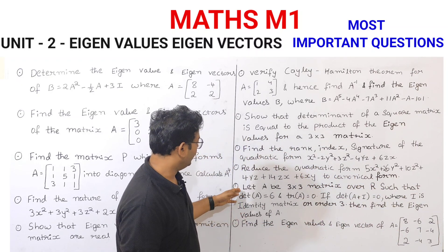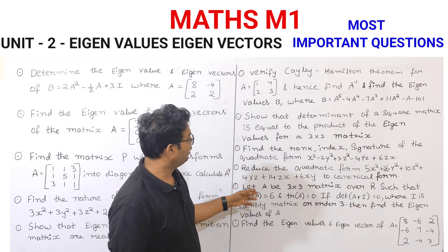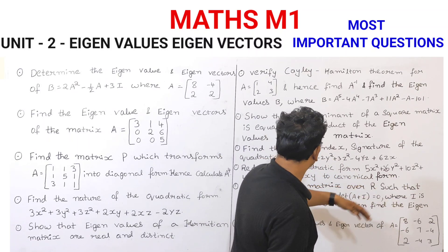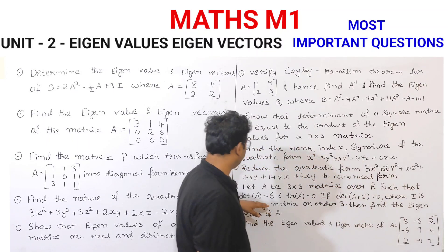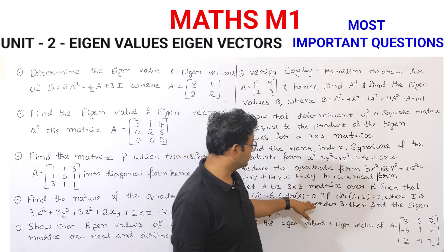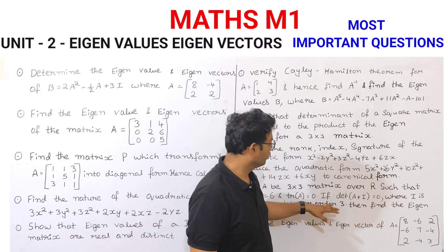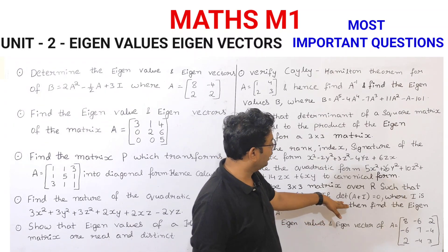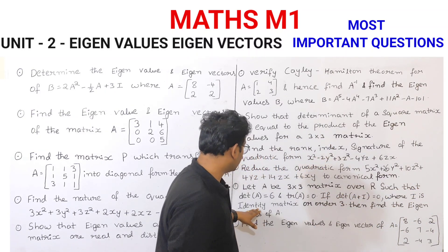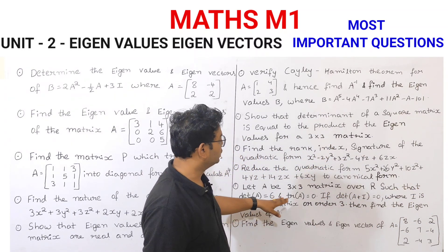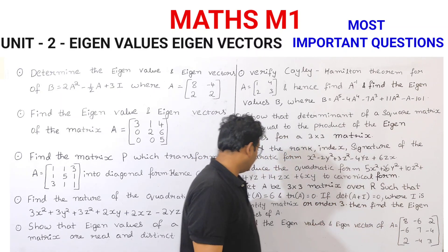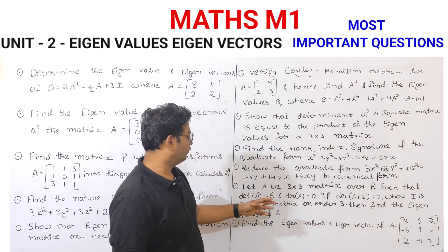And let A be a 3 by 3 matrix over R such that det A equals 6 and trace A equals 0. If det(A plus I) equals 0, where I is the identity matrix of order 3, then find the Eigen Values of A.